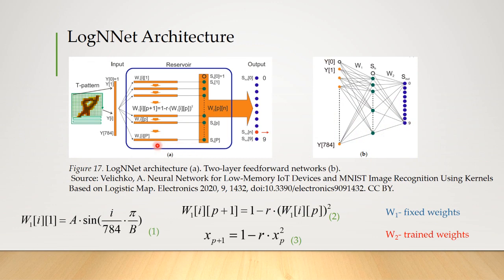The signals propagate in the same way as in a feedforward network. The weights W1 are not trained, but are set in a special way. The first line of the array of weights is set by a sine equation, depending on two parameters A and B. The rest of the lines are calculated using the recurrent logistic mapping with a simple equation with one parameter R. In this way, a reservoir with fixed weights W1 is created, and training is carried out only for the output weights W2.